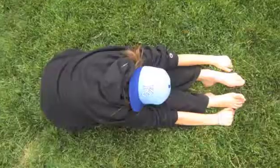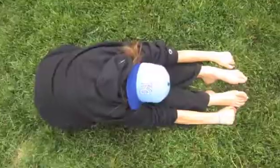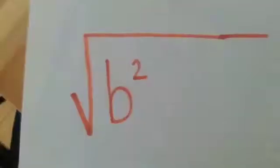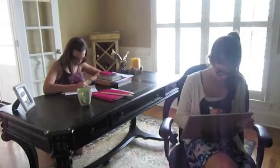x equals negative b plus or minus the square root of b squared minus 4ac over 2a. 1, 2, 3.